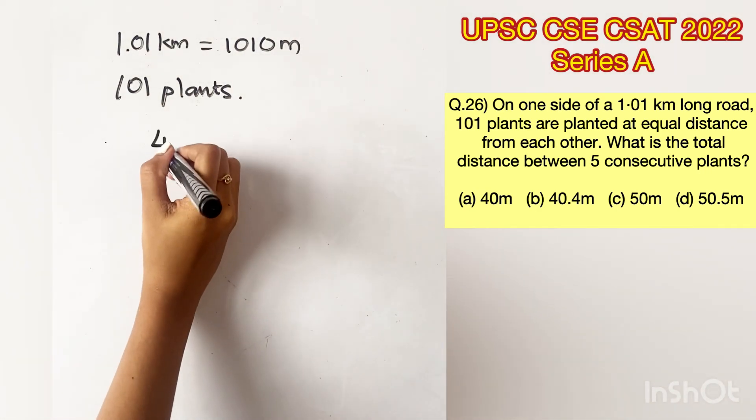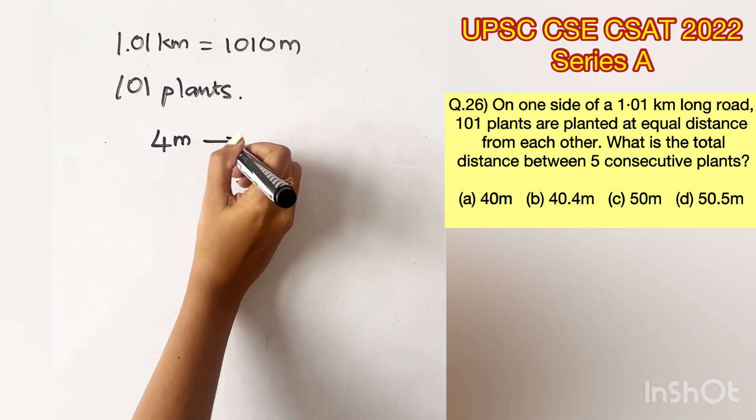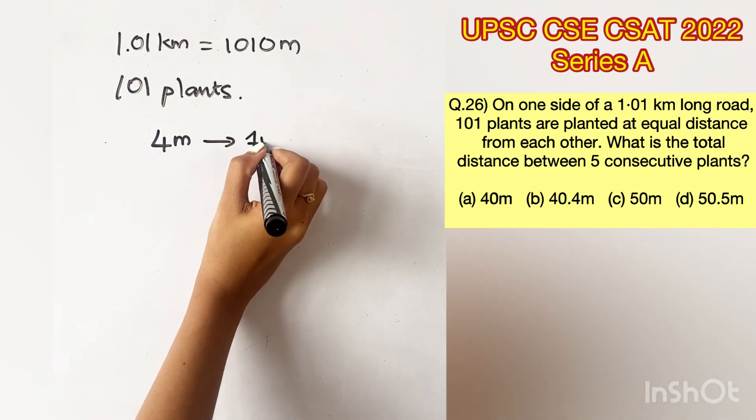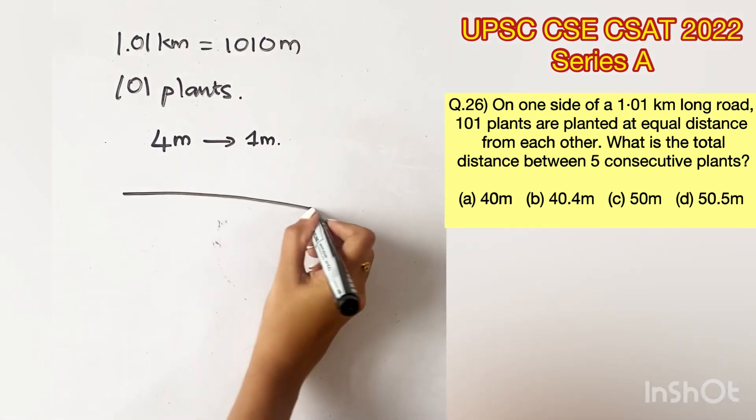Let's consider a 4 m long road. Let's say we have to place a plant at equal distance of 1 m between them. Now if this is the road...